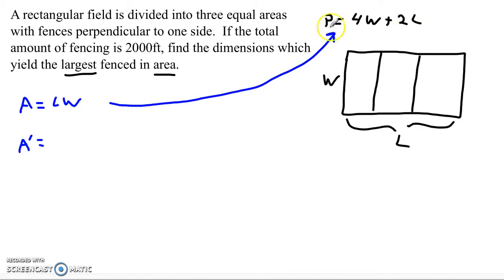If the perimeter is 4W plus 2L, and by the way, we know that that perimeter has to be 2,000 because they told us that the total number of fence, or the amount of fence we have to work with is 2,000, then this becomes an equation that we can solve either for W or for L to sub back into this one.